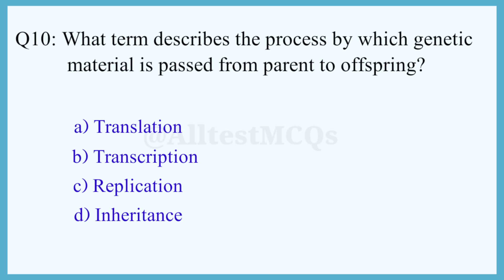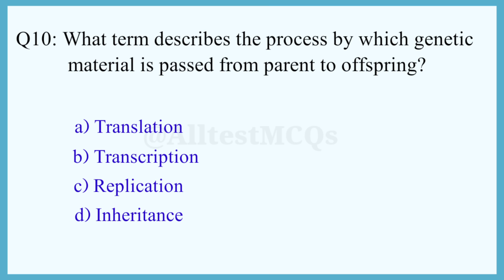Q10. What term describes the process by which genetic material is passed from parent to offspring? The correct answer is option D: Inheritance.